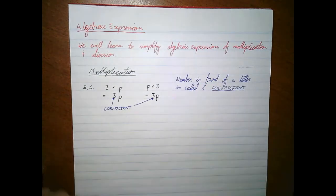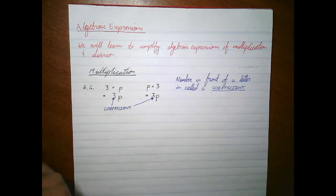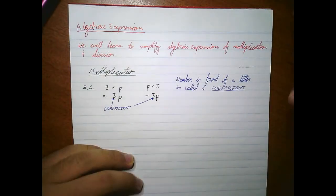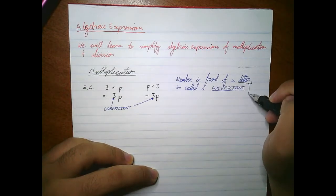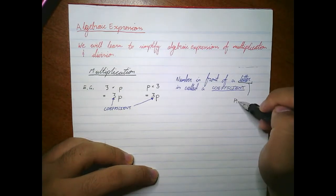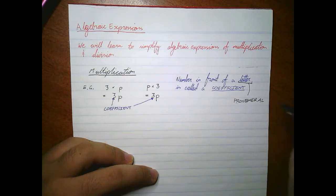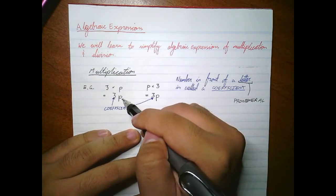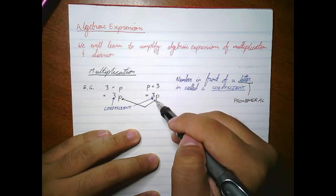As you hopefully can recall, a pronumeral is just another word for letter. So where you see the word 'letter', another way you can refer to that is a pronumeral. In this example, our pronumeral is p — p is the pronumeral.